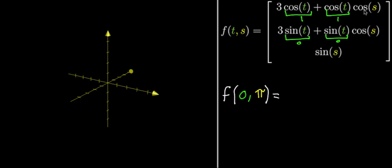Now, cosine of pi is negative one. So this here is gonna be negative one. This one here is also gonna be negative one. And then sine of pi, just like sine of zero, is zero. So this whole thing actually ends up simplifying quite a bit.